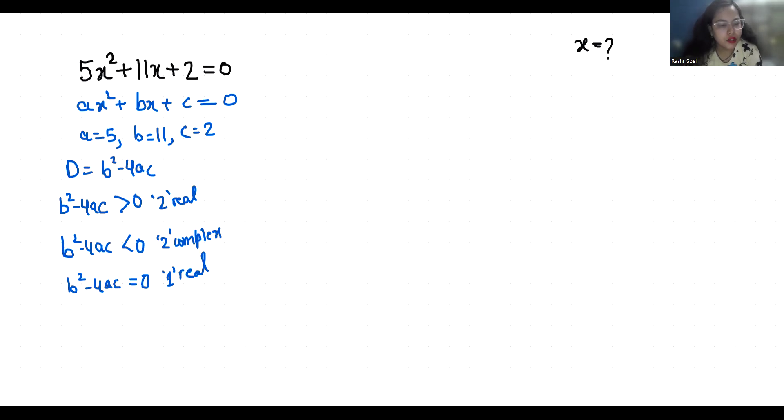So let's find out the value of b² - 4ac. b is 11² - 4 times 5 times 2. 11² is 121 minus 4 times 5 is 20 times 2 is 40, and 121 minus 40 is 81, which is positive, greater than zero. That means two real solutions exist.